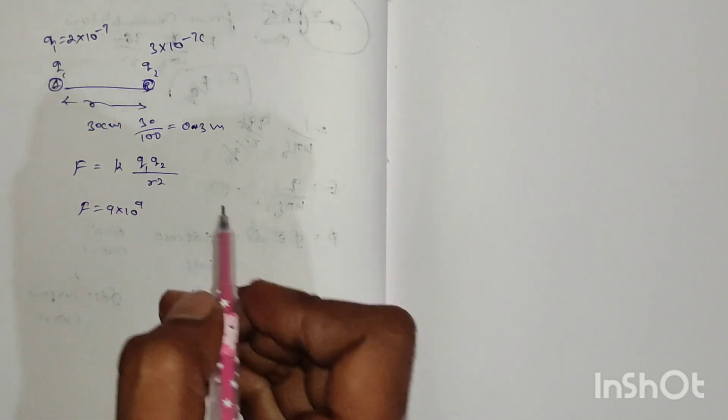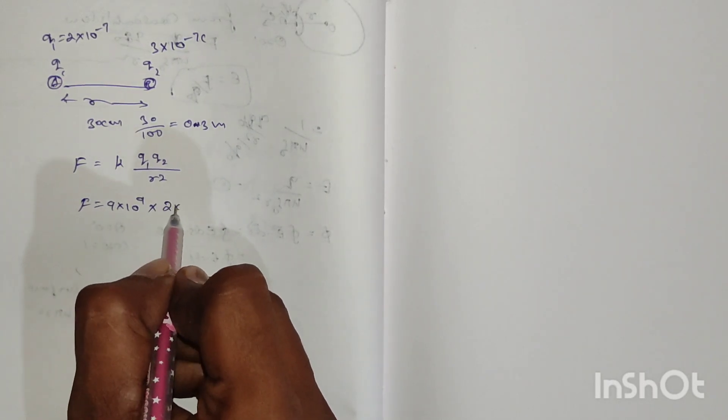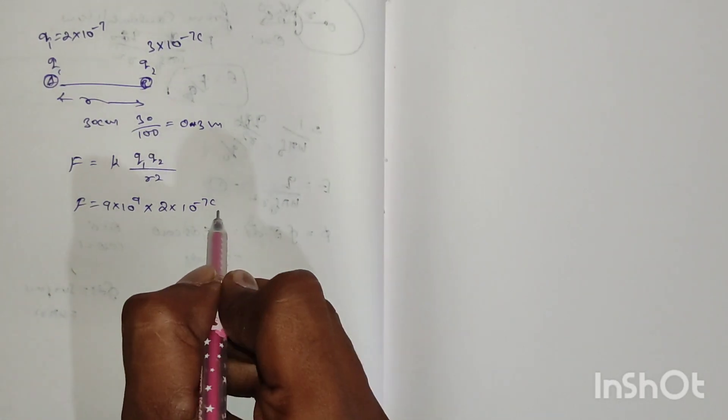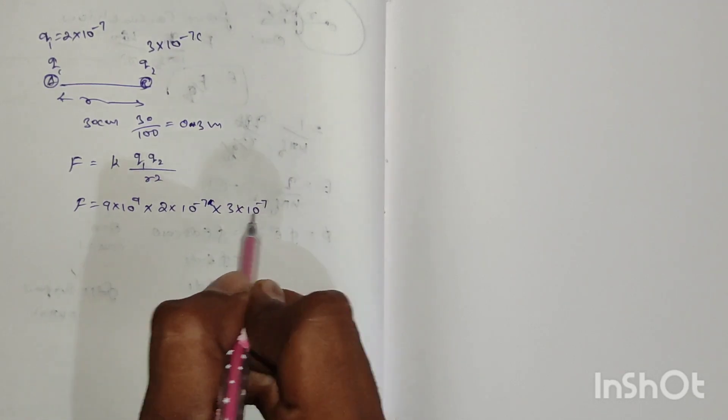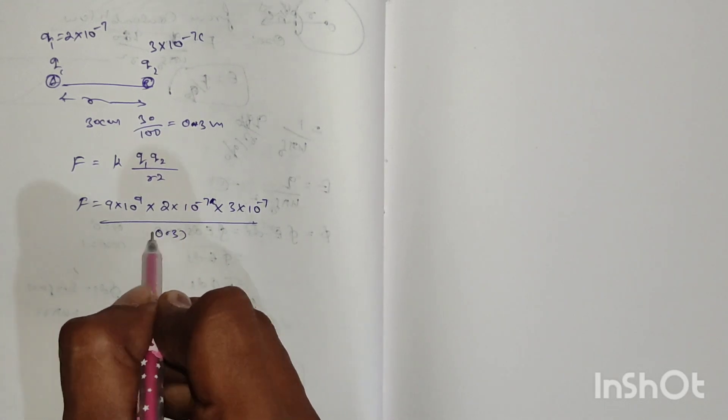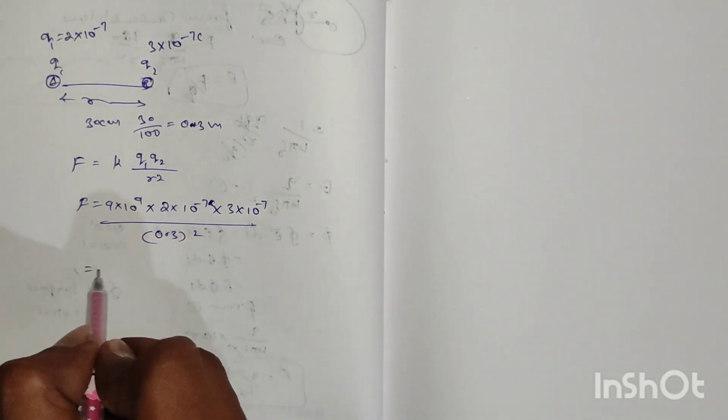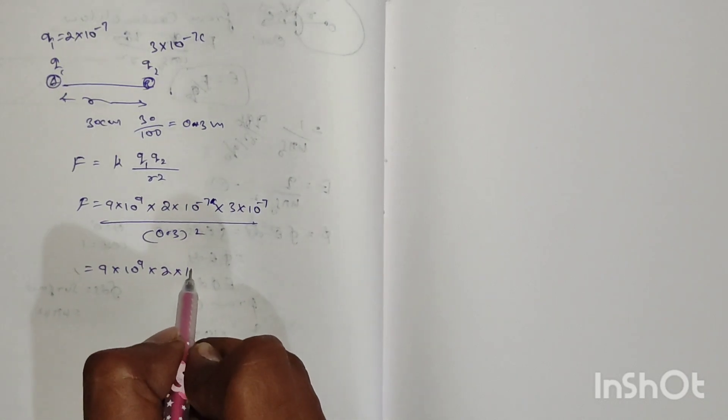F equals k, where k value is 9×10^9, times 2×10^-7 times 3×10^-7. The denominator r is 0.3 squared.